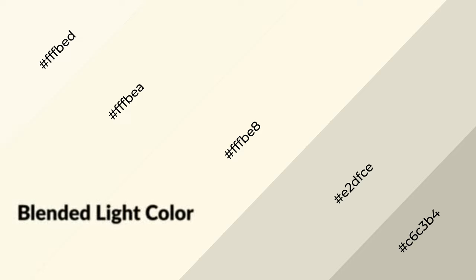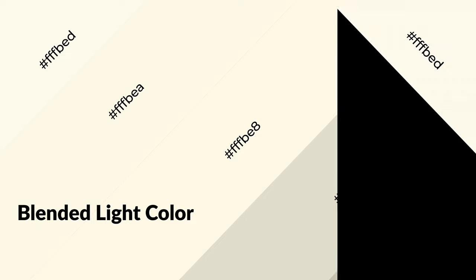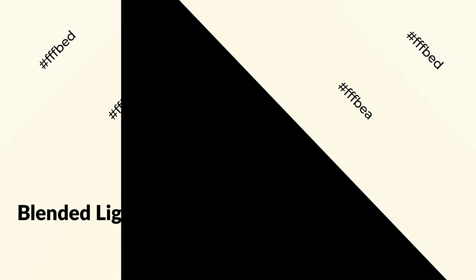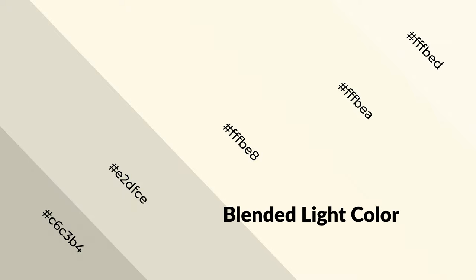Blended light is a warm color and it emits cozier and active emotions. Warm colors are symbols of warmth, fire, heat, and sunshine. It also evokes joy, passion, love, and even anger emotions. You can see them used in restaurants and gyms.